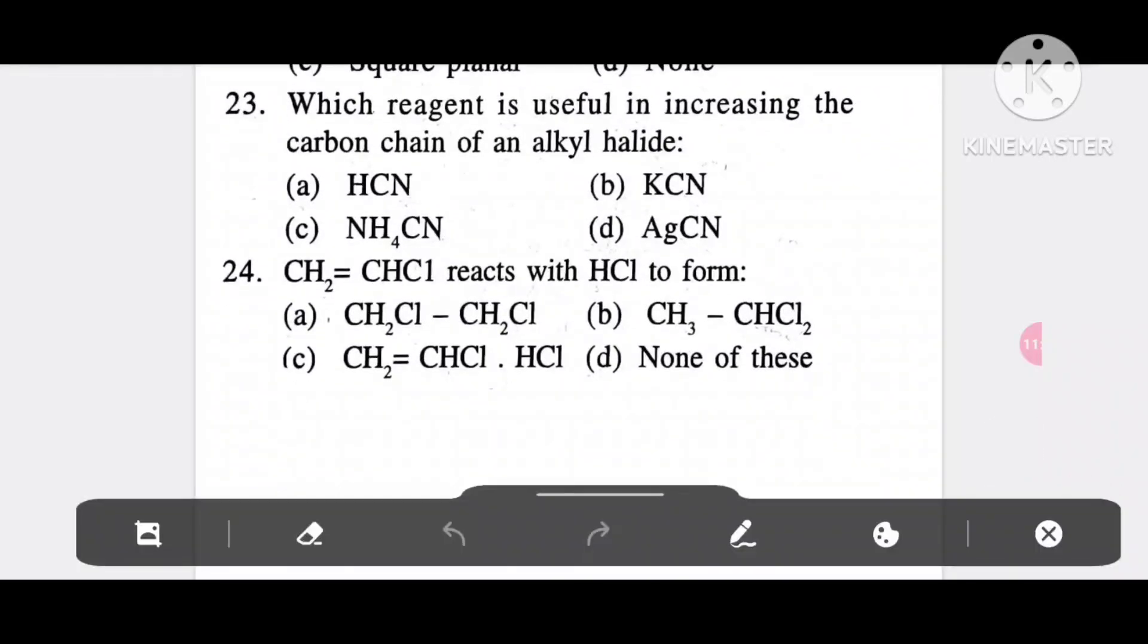Question 23: Which reagent is useful in increasing the carbon chain of an alkyl halide? Option A, HCN; option B, KCN; option C, NH4CN; option D, HGCN. It is option B, KCN.